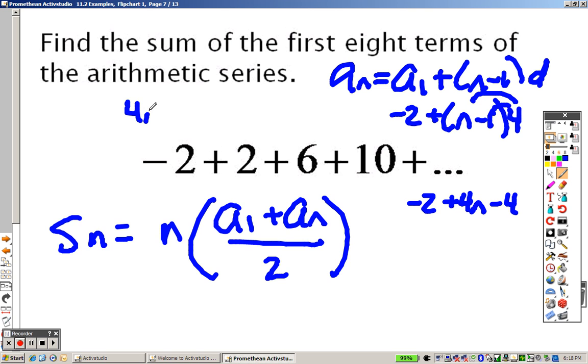So I distribute to get negative 2 plus 4N minus 4. So actually, it's 4N minus 6. So to find the eighth term, I plug in an 8. So that's like saying 32 minus 6. So now I know what the eighth term is. The eighth term is 26.